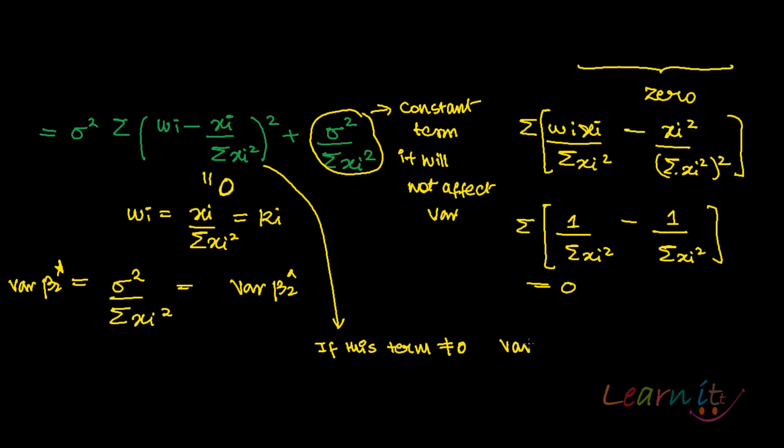Then variance of beta 2 star would be greater than or equal to variance of beta 2 hat, because variance of beta 2 hat is this term. So some positive number plus this term will be greater than variance of beta 2 hat.